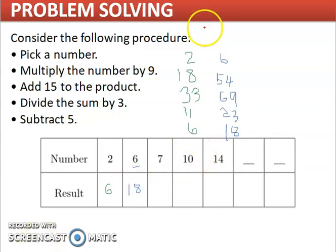Now if you pick 7, multiply that by 9, you get 63. Add 15 to 63, you get 78.